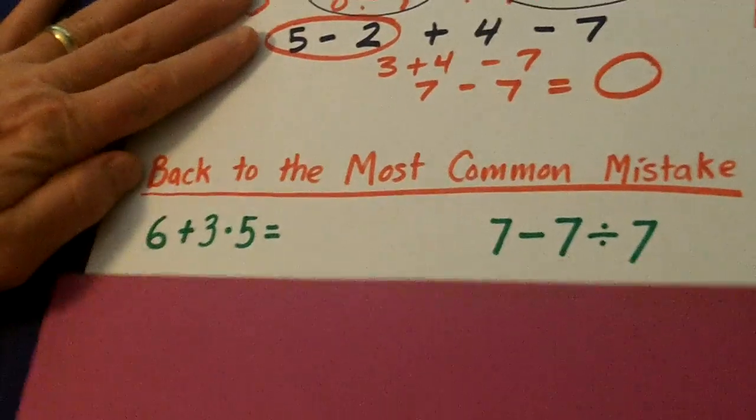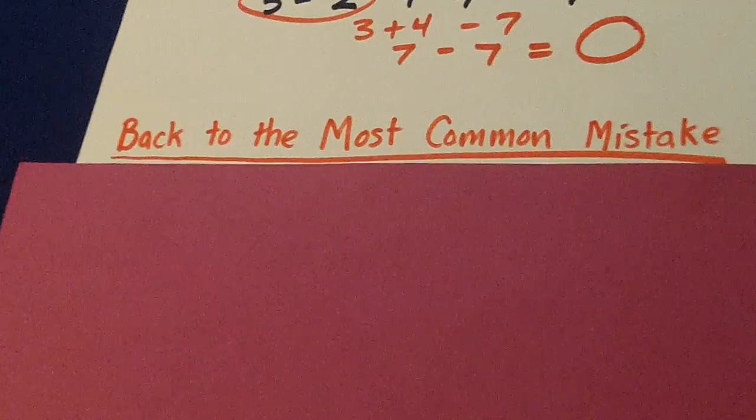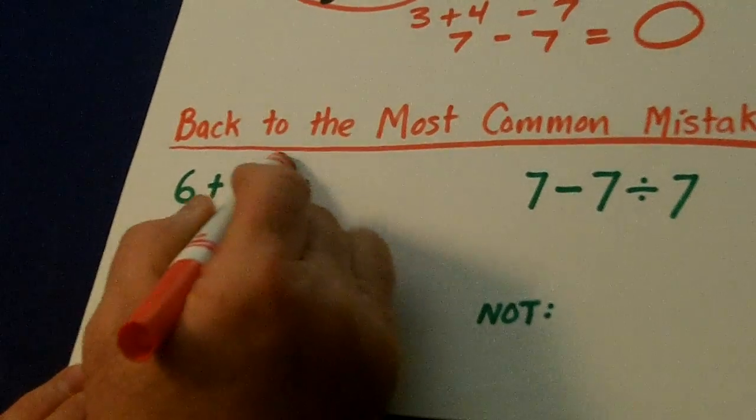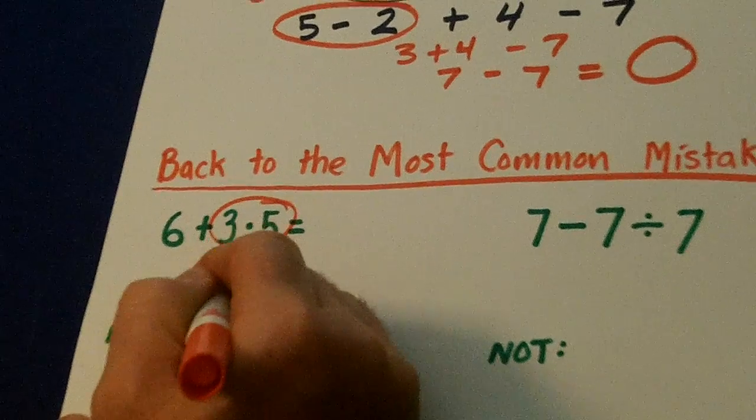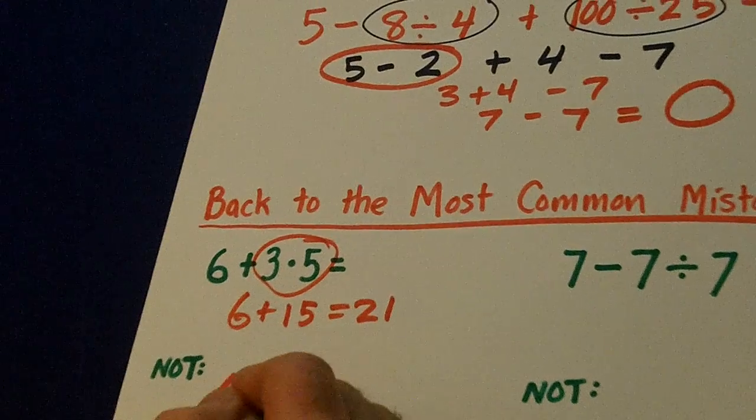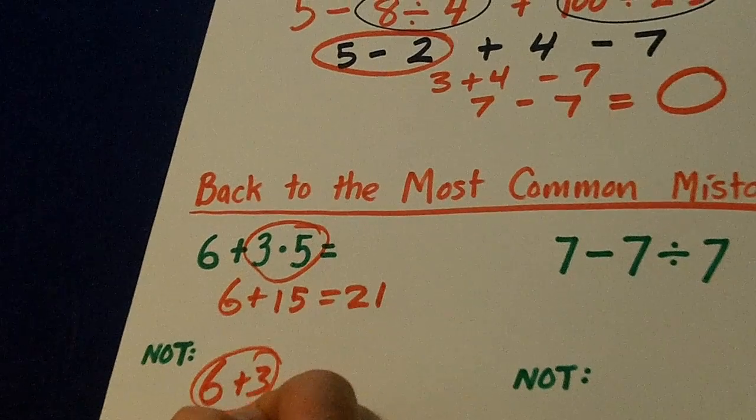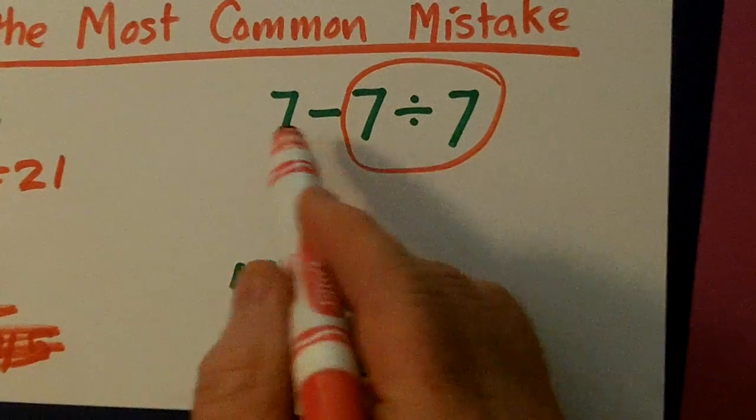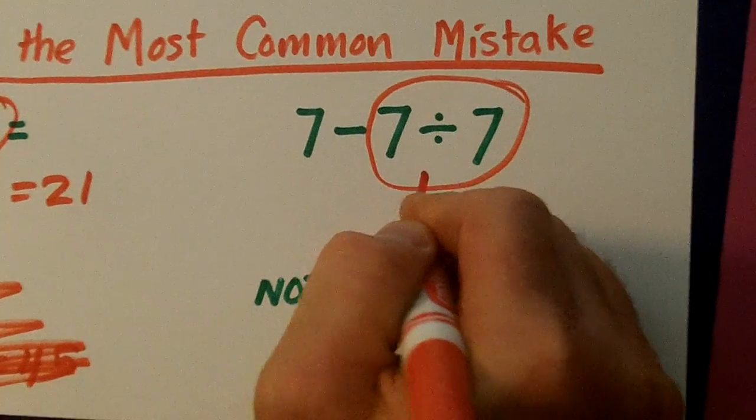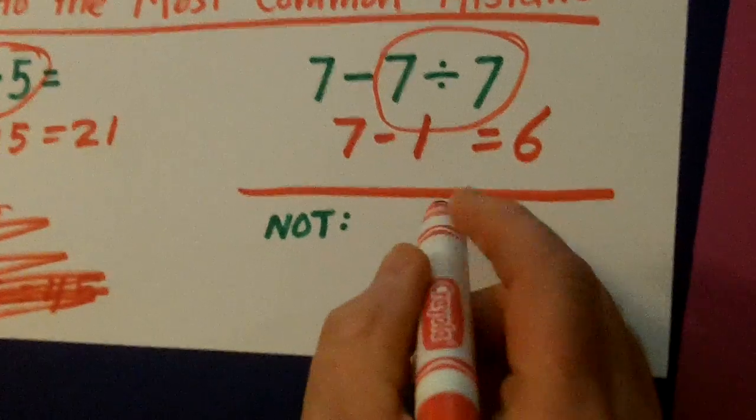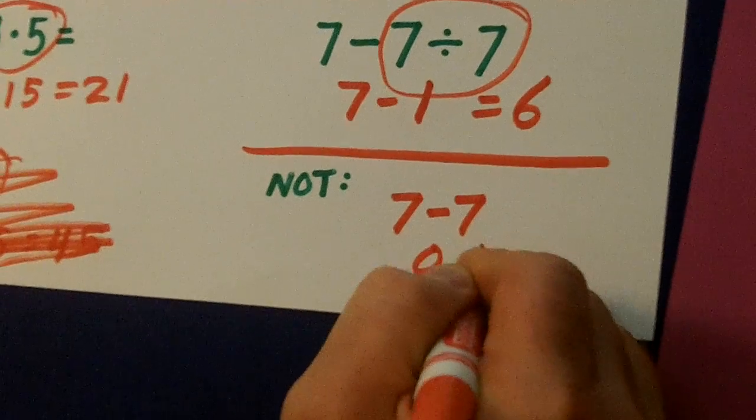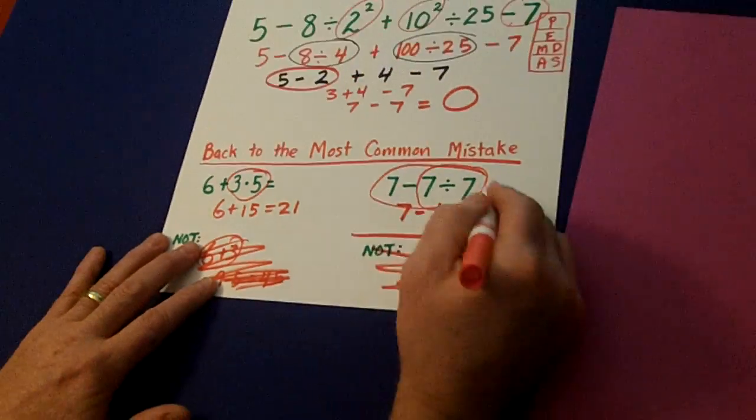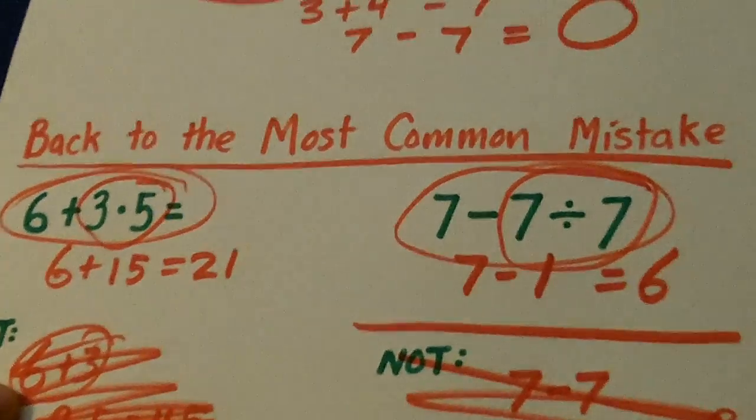And basically, the number one problem that will keep coming up over and over in equations, all this fancy stuff, tries to get kids to remember this. So, 6 plus 15 is 21, not 6 plus 3 is 9 times 5 is 45. This will come first. 7 minus 7 divided by 7. That's 1, 7 minus 1 is 6, not 7 minus 7 is 0, divided by 7. Order of operations will really help us with these simple things once we get to equations. Thank you.